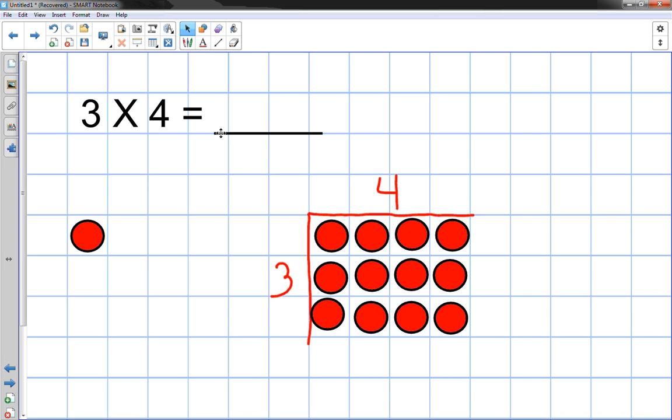So 3 times 4, and then I physically just count them, the little circles. And there's 1, 2, 3, 4, 5, 6, 7, 8, 9, 10, 11, 12. So 3 times 4 equals 12.